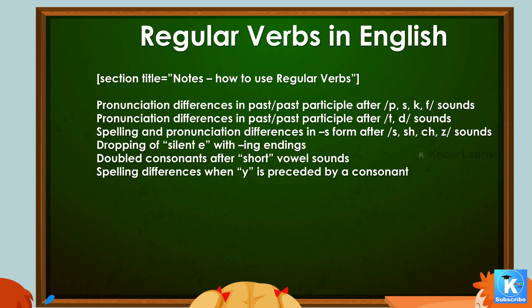Notes on how to use regular verbs. There are pronunciation differences in past and past participle forms after /p/, /s/, /k/, /f/ sounds, and after /t/ and /d/ sounds. There are also spelling and pronunciation differences in the s-form after /s/, /sh/, /ch/, /z/ sounds, dropping of silent 'e' with -ing endings, doubled consonants after short vowel sounds, and spelling differences when y is preceded by a consonant.